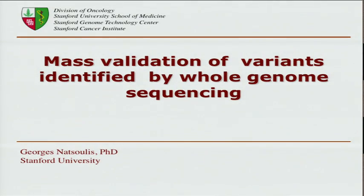Today I'm going to talk about a more lab-oriented project where we're trying to do mass validation of variants identified by whole genome or exome sequencing, hopefully in a single lane of sequencing, and possibly even indexing the sample so you can do multiple pairs in one lane.